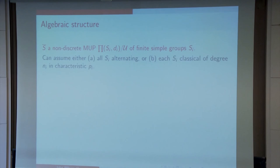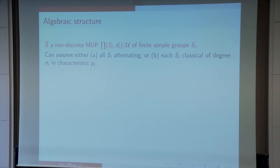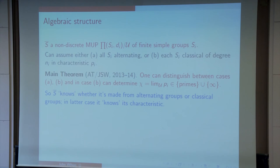Well, the range of ideas used in the proof of that is a hard act to follow. What we did is take a rather different approach. So, again, S is a non-discrete metric ultraproduct, S̄ of groups Si, Di. And we can assume that all of the Si's are alternating or each Si, etc., as I said a moment ago. And this is our main theorem on algebraic structure. One can distinguish between the cases A and B, the case where all of the groups are alternating and the case where all of the groups are classical. And in case B, we can actually determine the ultra-limit of the primes involved, the primes together with infinity. So, this ultraproduct actually knows what it's made out of. It knows what groups went into its construction.